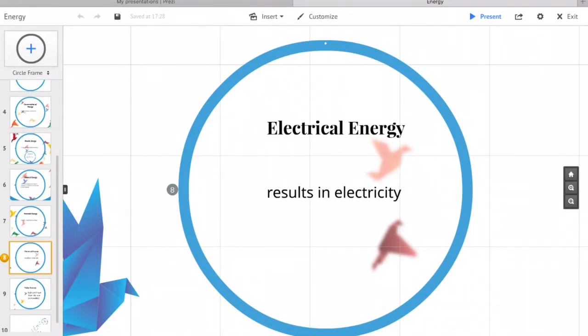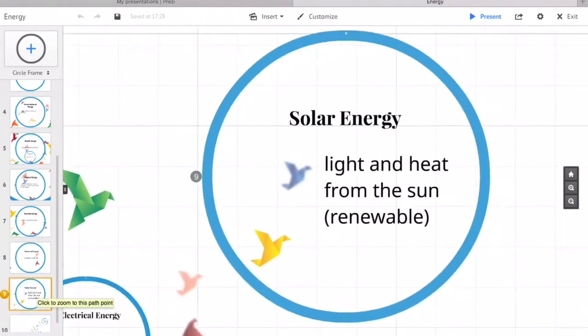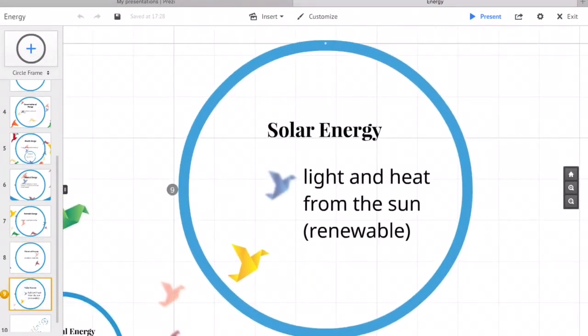Solar energy is radiant light and heat from the Sun, harnessed using technology. It's a significant form of renewable energy.